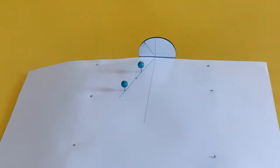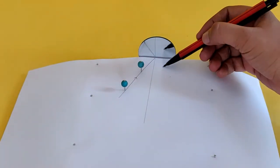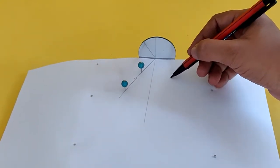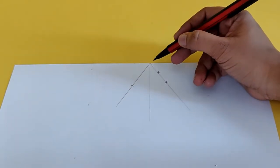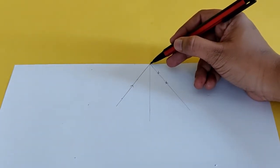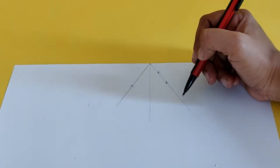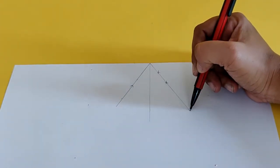Now, remove the pins and dot the holes made by the pins. Remove the paper from the board and draw a line from the point of incidence through the two dots. This line indicates the path of the reflected ray.